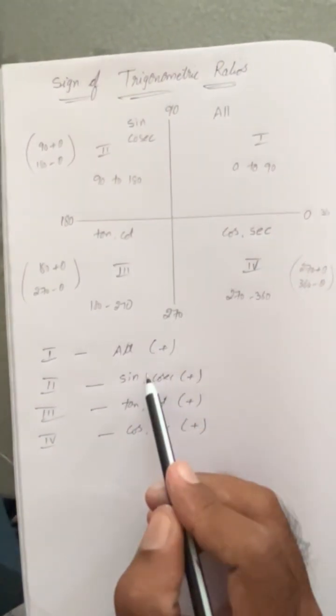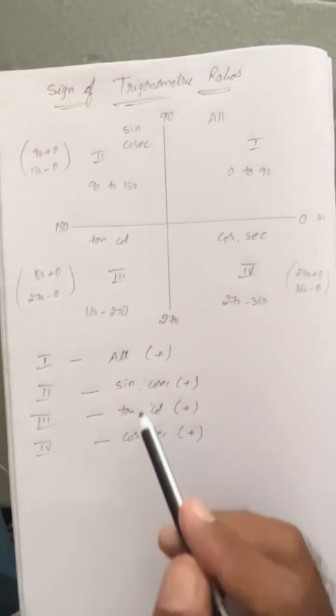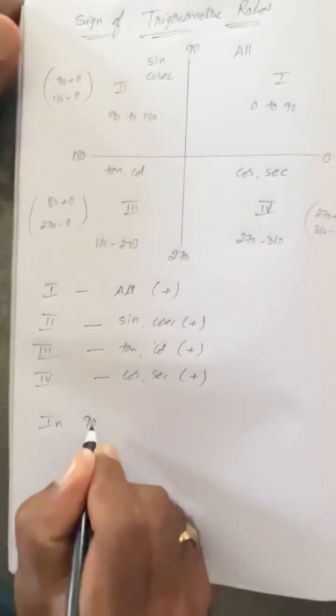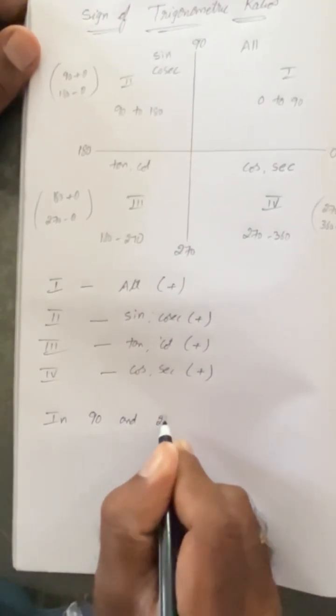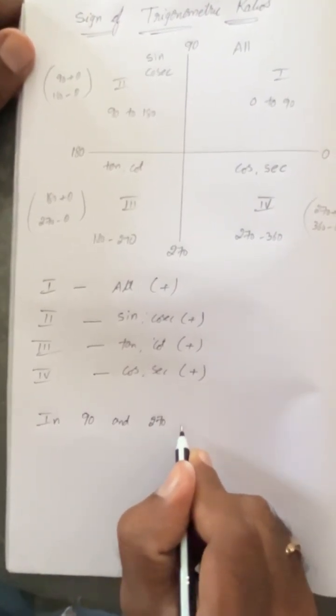Again I have done the same thing, first quadrant all are positive, second quadrant sine and cosecant, third quadrant tan and cot, fourth quadrant cos and secant, they are positive. Except that, remaining will be negative.